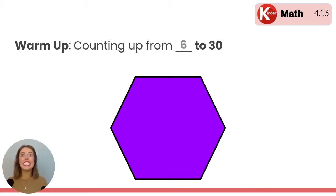A hexagon has six sides. So we are going to put that number six in our head and count up to the number 30. Okay? Starting with 6,